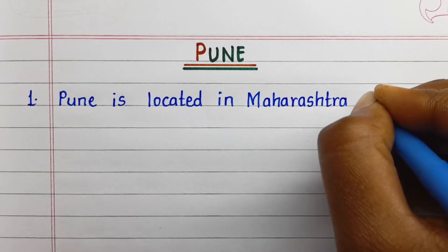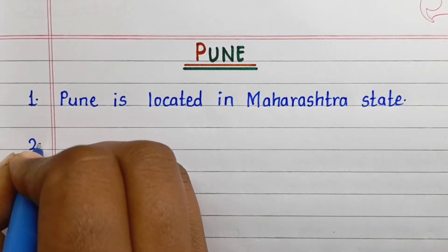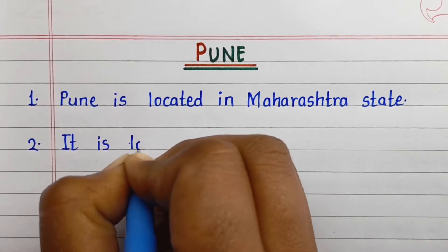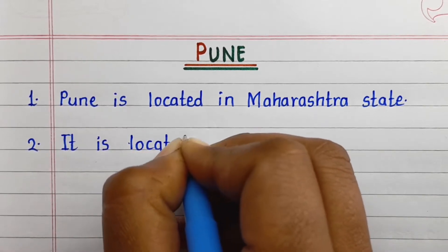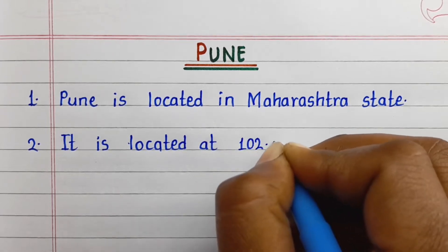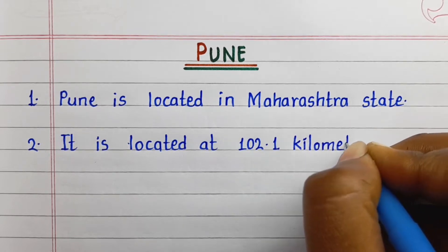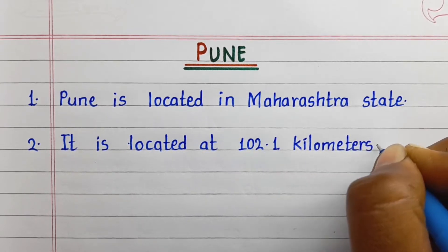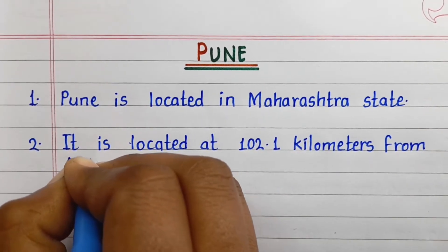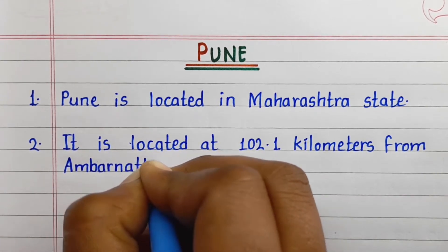First line: Pune is located in Maharashtra state. Second line: it is located at 102.1 kilometers from Ambarnaath.